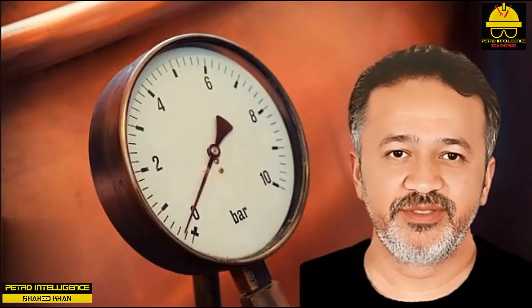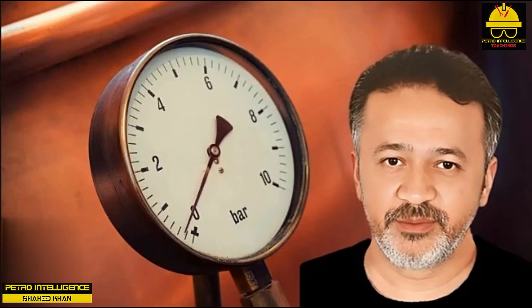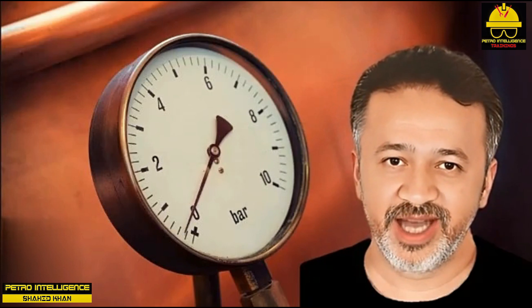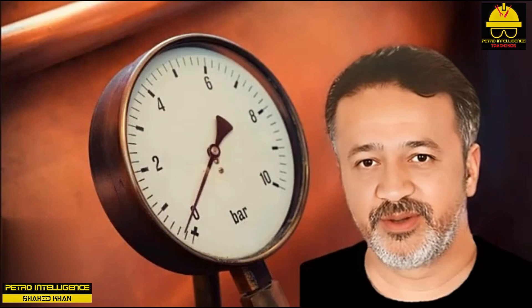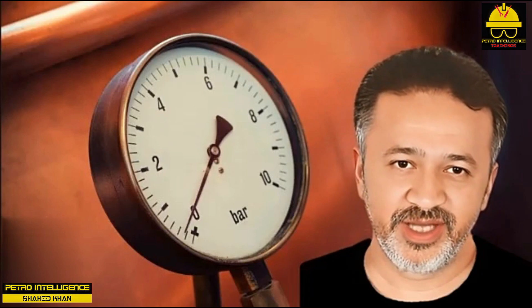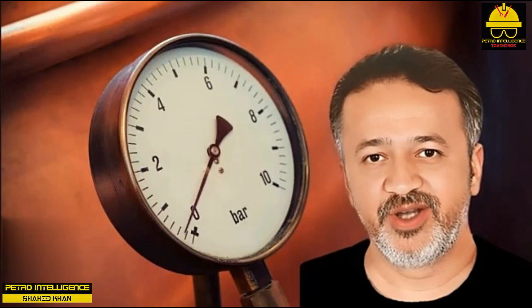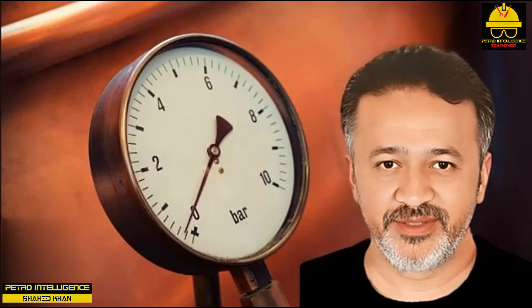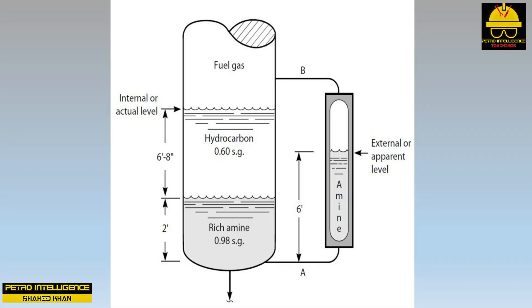Level indication: what is the difference between a gauge glass and a level glass? Simply, there is no such thing as a level glass. The liquid level shown in a gauge glass does not correspond to the level in a process vessel. This picture is a good example — this is the bottom of an amine fuel gas absorber, a tower used to remove hydrogen sulfide from the fuel gas.